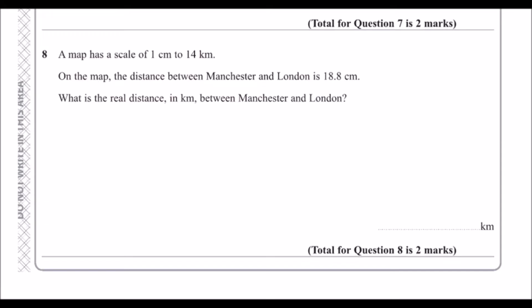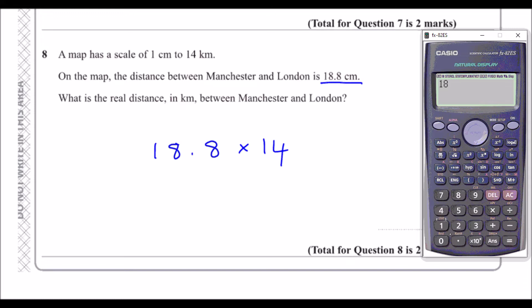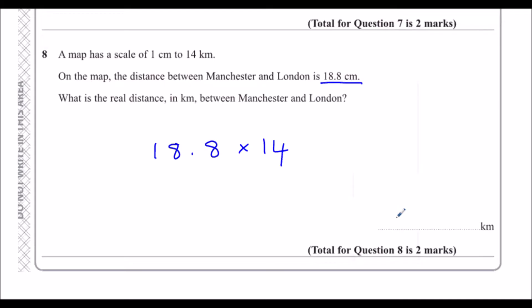Question 8: A map has a scale of 1 cm to 14 km. On the map the distance between Manchester and London is 18.8 cm. Every centimetre is 14 km, so 18.8 times 14 is 263.2 km.